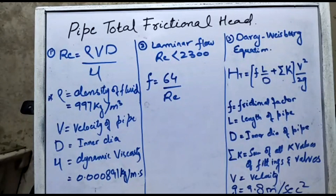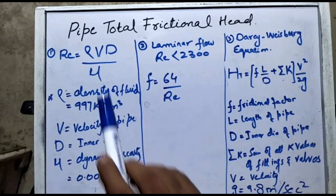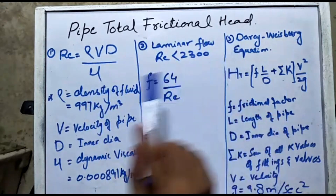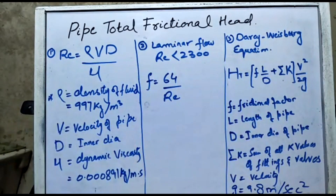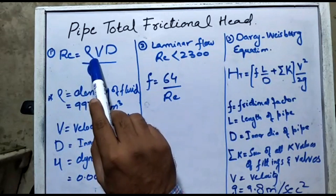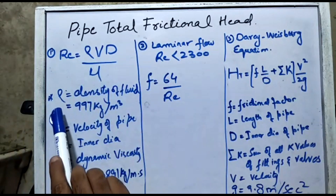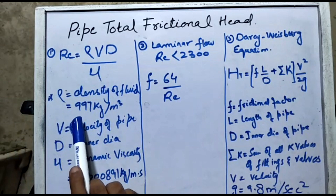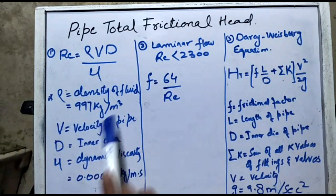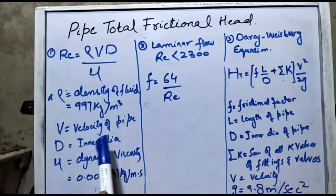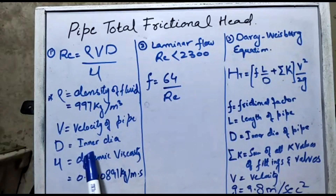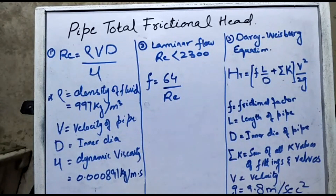We use three types of formulas in computing pipe total friction head. The first is the Reynolds number, which is equal to ρvd/μ, where ρ is the density of the fluid — for water its value is 997 kg/m³. v is the velocity of the fluid in the pipe, d is the inner diameter of the pipe, and μ is the dynamic viscosity, which for water is 0.000891 kg/(m·s).